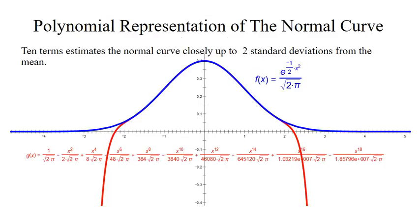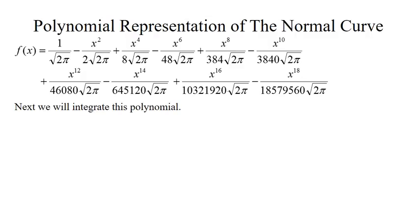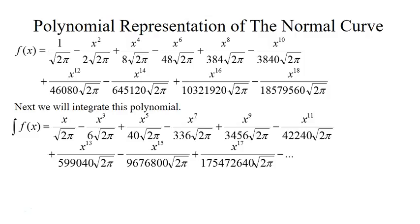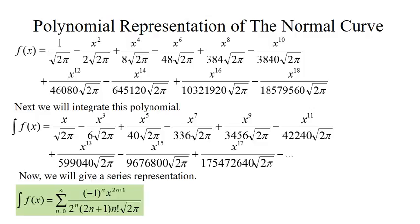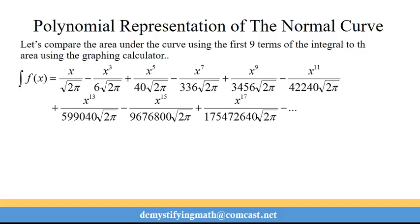What we want to do now is integrate the polynomial so that we can find the area under the curve. We integrate term by term. Following the pattern from integrating, we get negative 1 to the n times x to the 2n plus 1, divided by 2 to the n plus 1 times n factorial, over the square root of 2 pi. That series representation allows you to take more terms if needed.